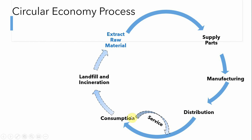For example, during consumption itself, if a good is no longer useful, in a circular economy process we focus on its repair and service so that the same good can be used by the same consumer, which again reduces products going to landfill or incineration. For example, a Land Rover created from raw materials and supply parts, distributed to consumers — if it develops some problems, it should not go directly to landfill. Instead, we create service centers where it can be repaired and continue to be used by the same consumer.